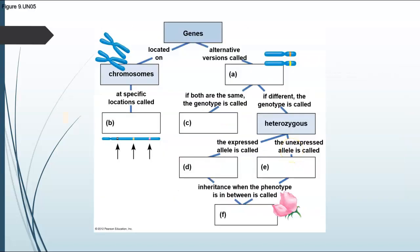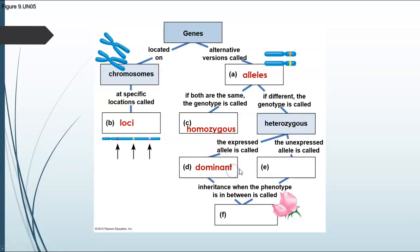Here's a quick concept map going over genes and chromosomes. Genes are located on chromosomes. There are alternate versions of genes called alleles. The alleles or genes are at specific locations called loci — loci is the plural, the singular is locus, L-O-C-U-S. If both alleles are the same, we call that genotype homozygous. If different, the genotype is called heterozygous. In a heterozygous individual, the expressed allele is called dominant and the unexpressed one is called recessive. When the phenotype is in between the dominant and recessive phenotypes, that's called incomplete dominance.